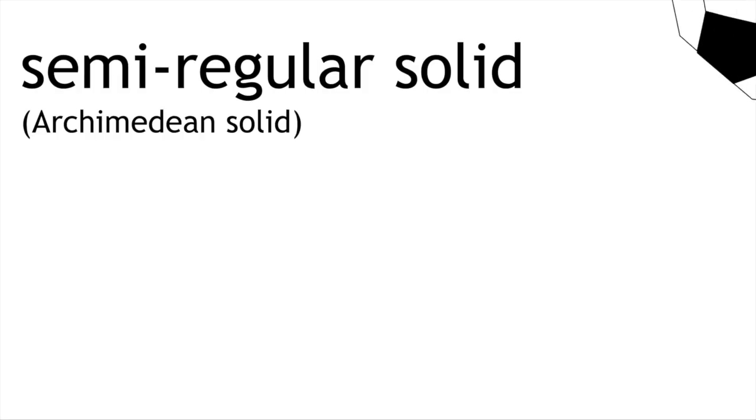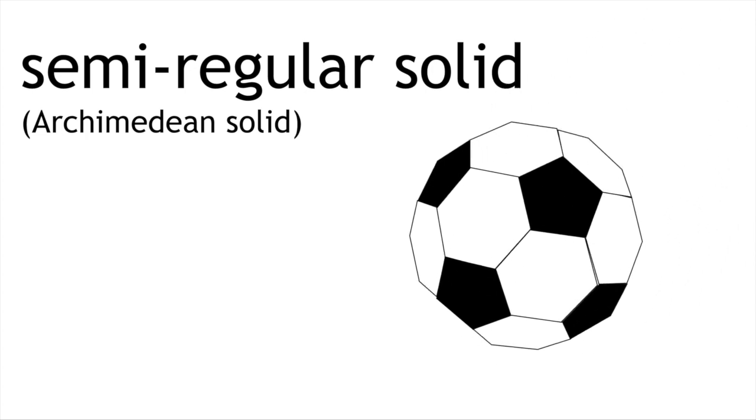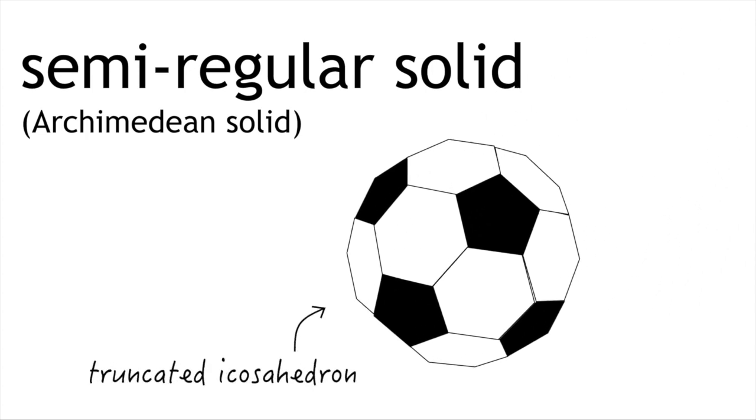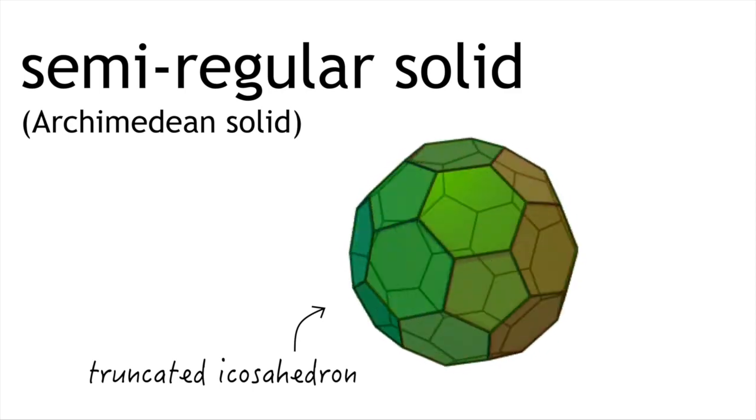The semi-regular solids are called the Archimedean solids, and one of the most recognisable of these is the hexagon and pentagon's formation that gives us a polyhedron that the soccer ball is based on.